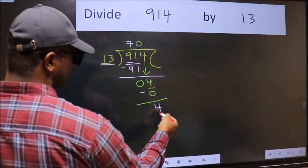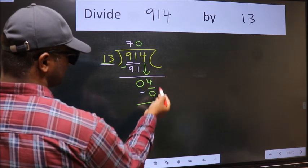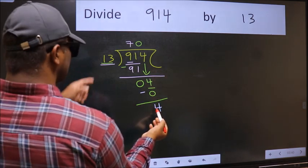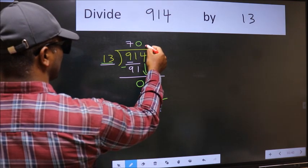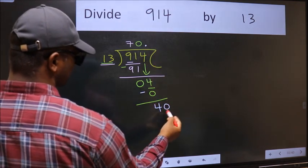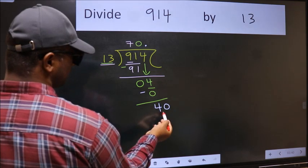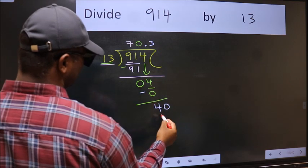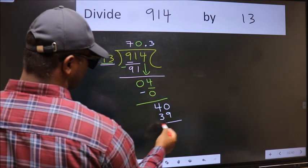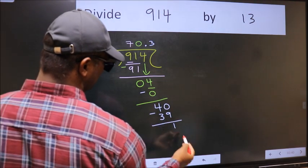Over here we did not bring any number down and 4 is smaller than 13. So now we can put dot and take 0. So 40. A number close to 40 in 13 table is 13 times 3 is 39. Now we should subtract, we get 1.